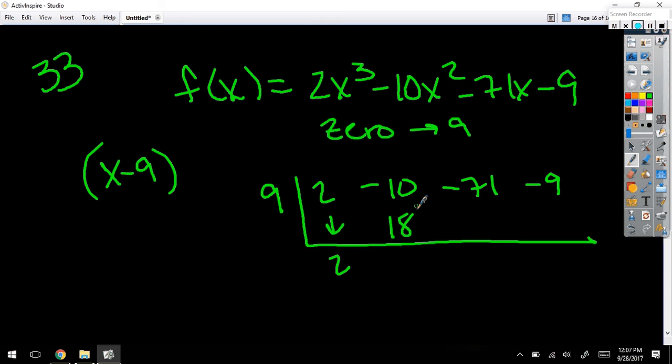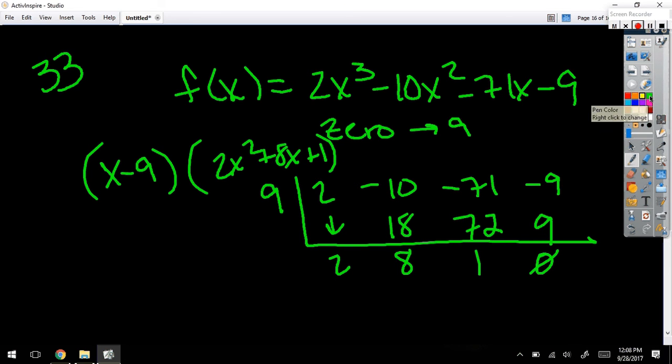I bet y'all couldn't factor these because they're not factorable. I bet you had to use quadratic formula. Because it actually comes into 9 times 0, so you get (x - 9)(2x² + 8x + 1). That's not going to factor because nothing multiplies to 2 but adds to 8.